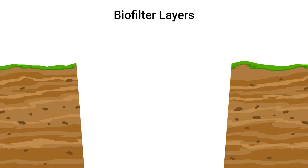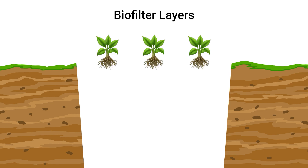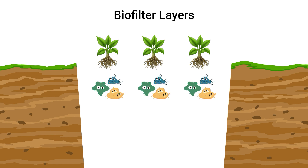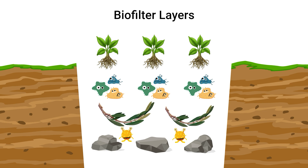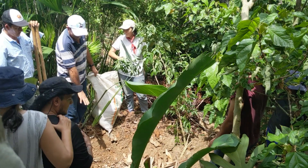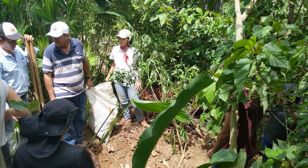When grey water enters the biofilter, it first passes through the top layer of plants. The roots of these plants absorb nutrients and provide oxygen to beneficial bacteria, which break down organic matter and pollutants in the water. The gravel layer then acts as a physical filter, trapping larger particles and debris, while also providing a surface for other beneficial bacteria to grow, which further break down different organic contaminants. The compost layer, rich in organic matter, further enhances microbial activity and stores water and nutrients.